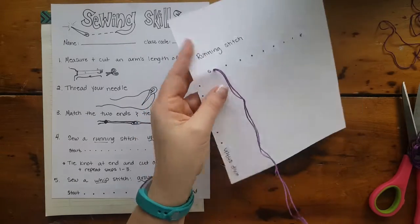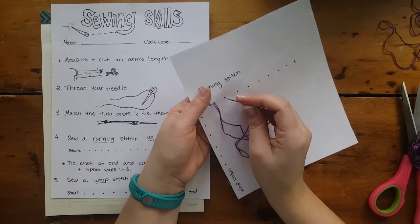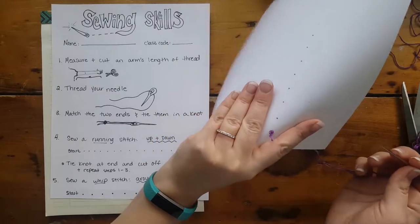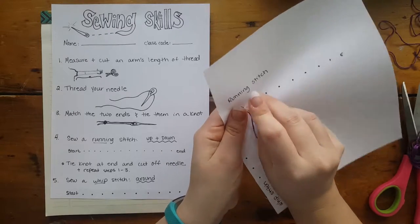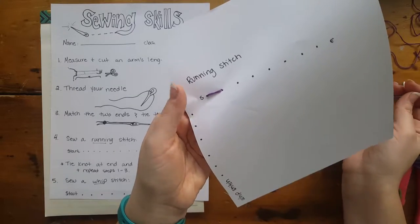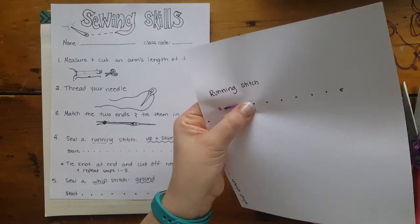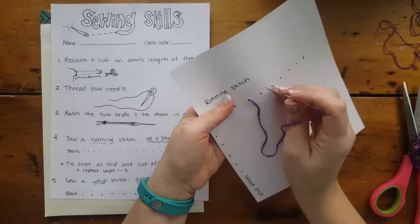You want to spread your fingers out so you don't poke yourself. We're going down, pull—don't pull too tight since we're using paper. Find the next dot, poke up, and repeat.